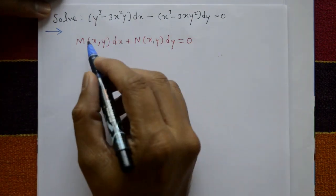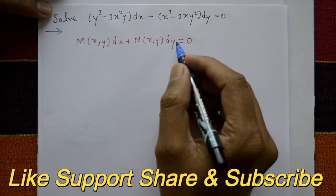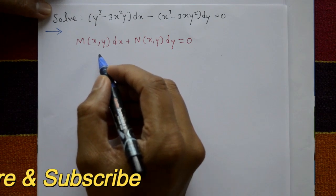This form is M of xy dx plus N of xy dy equal to 0. First we check the equation is exact or not.